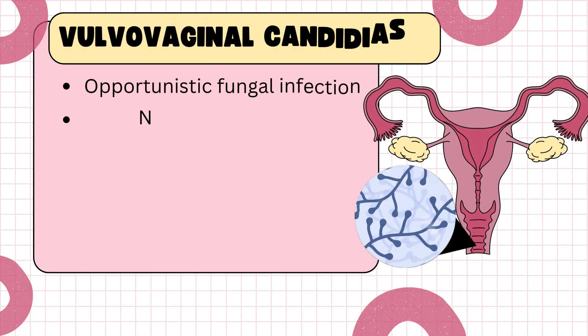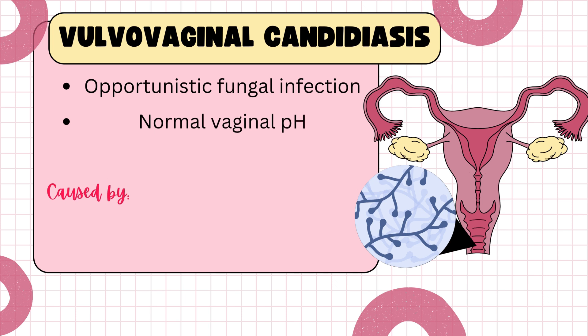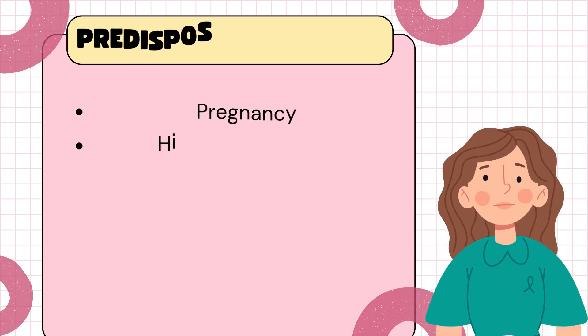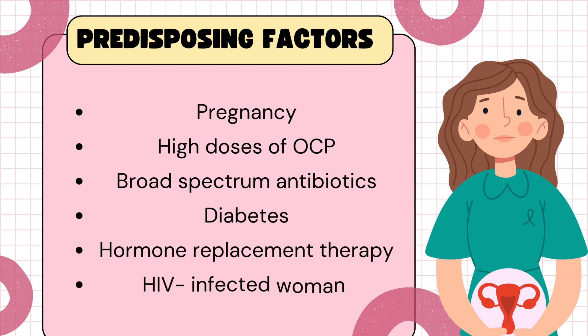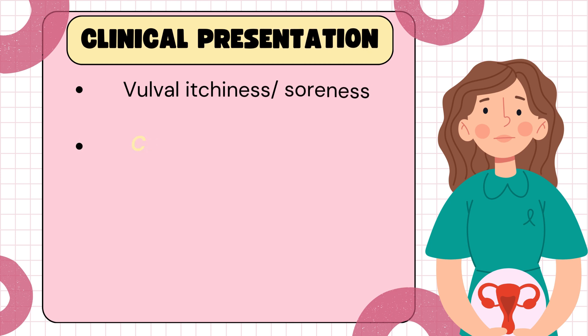Next up, let's talk about vulvovaginal candidiasis, very commonly known as a yeast infection. Vulvovaginal candidiasis is due to an overgrowth of Candida albicans, a yeast that typically resides in small amounts within the vagina without causing symptoms. However, certain factors can disrupt this balance and lead to infection — antibiotics, pregnancy, and uncontrolled diabetes are very common predisposing factors. Candidiasis is also considered an opportunistic infection, so individuals with compromised immune systems — such as patients with HIV/AIDS, those undergoing chemotherapy, or those on immunosuppressive medications — are at higher risk.